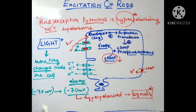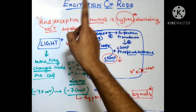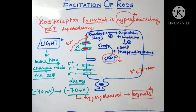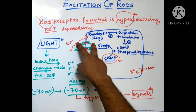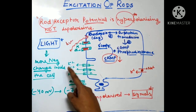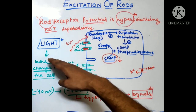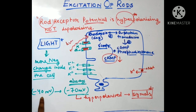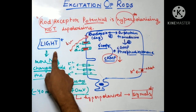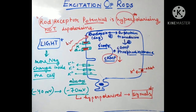When the membrane potential reaches minus 70 millivolts, the rod cell becomes hyperpolarized, and signals are transmitted from the rods to the brain. This is how the rod receptor potential is hyperpolarizing and not depolarizing. The main sequence is: cGMP decreases due to rhodopsin degeneration → cGMP-gated sodium channels get blocked → positive ions go out but cannot come in → net negative charge builds up → potential goes from minus 40 to minus 70 millivolts → hyperpolarization → signal transmission.